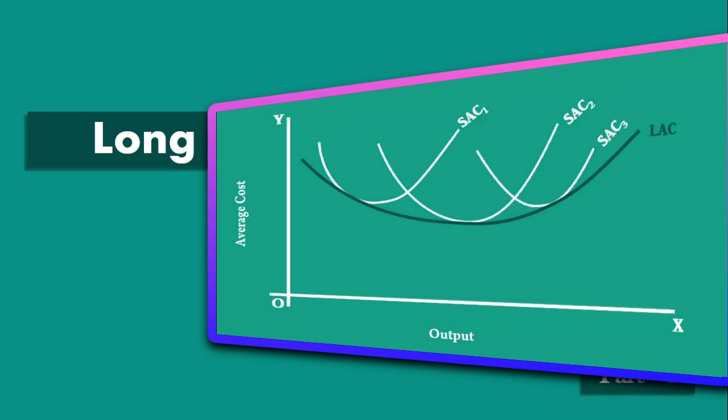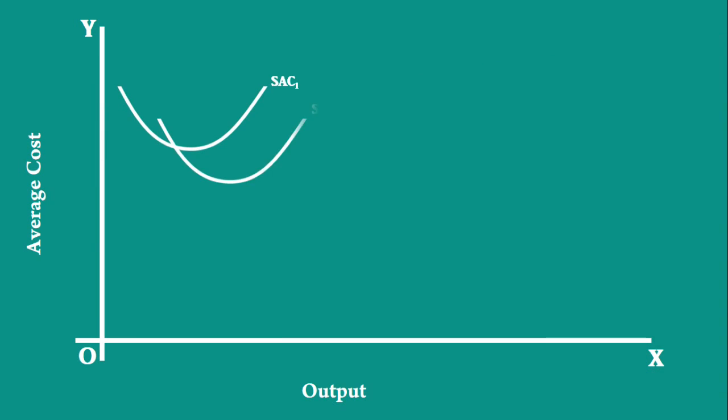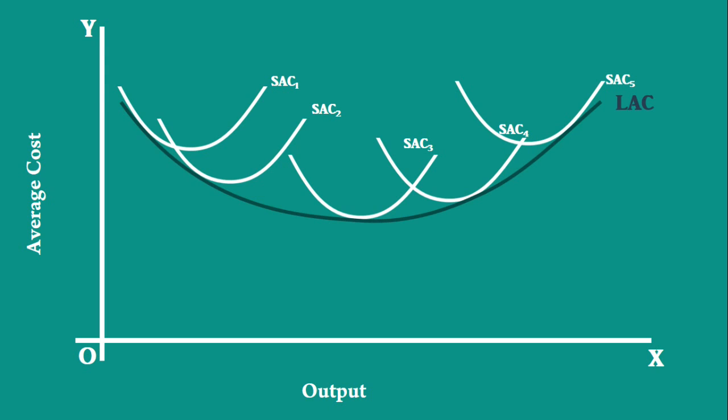As I said earlier, I will show only those plant curves which are required for our analysis. Look at this graph. SAC1, SAC2, SAC3, SAC4, and SAC5 are the plant curves. They represent five plant sizes. LAC is the Long Run Average Cost Curve.